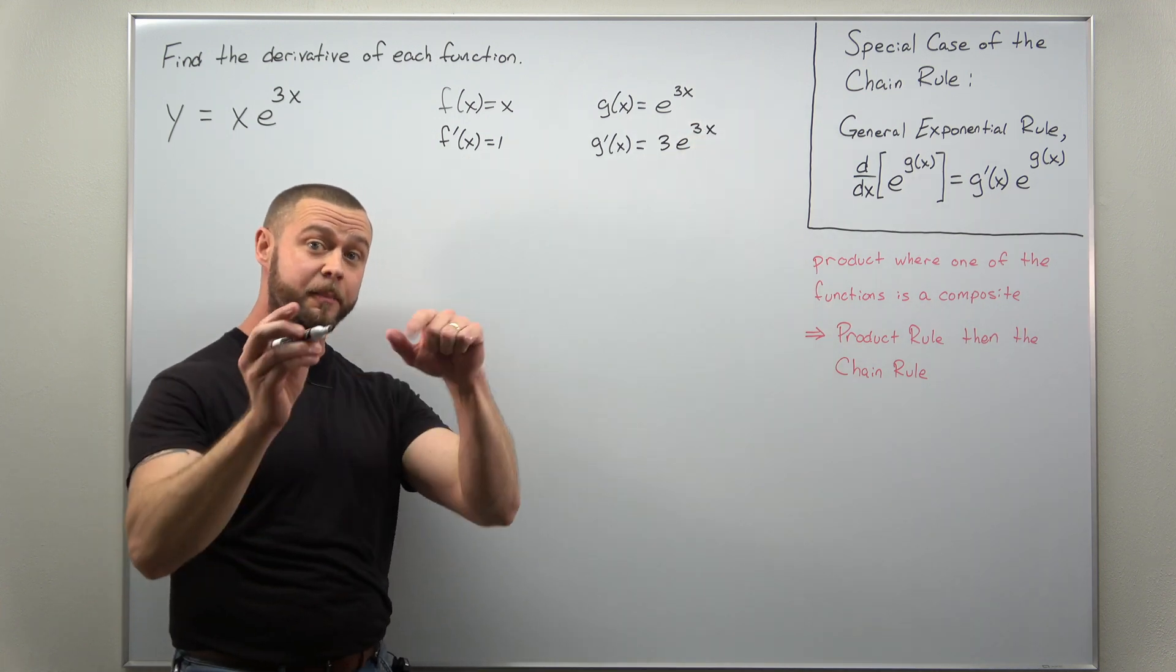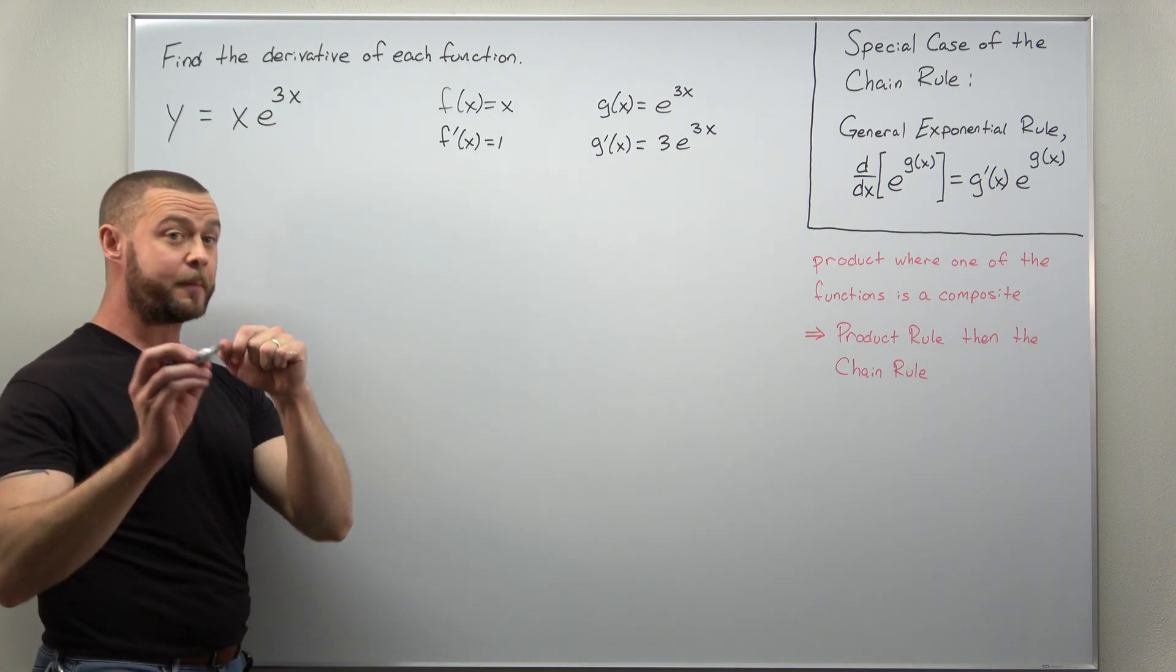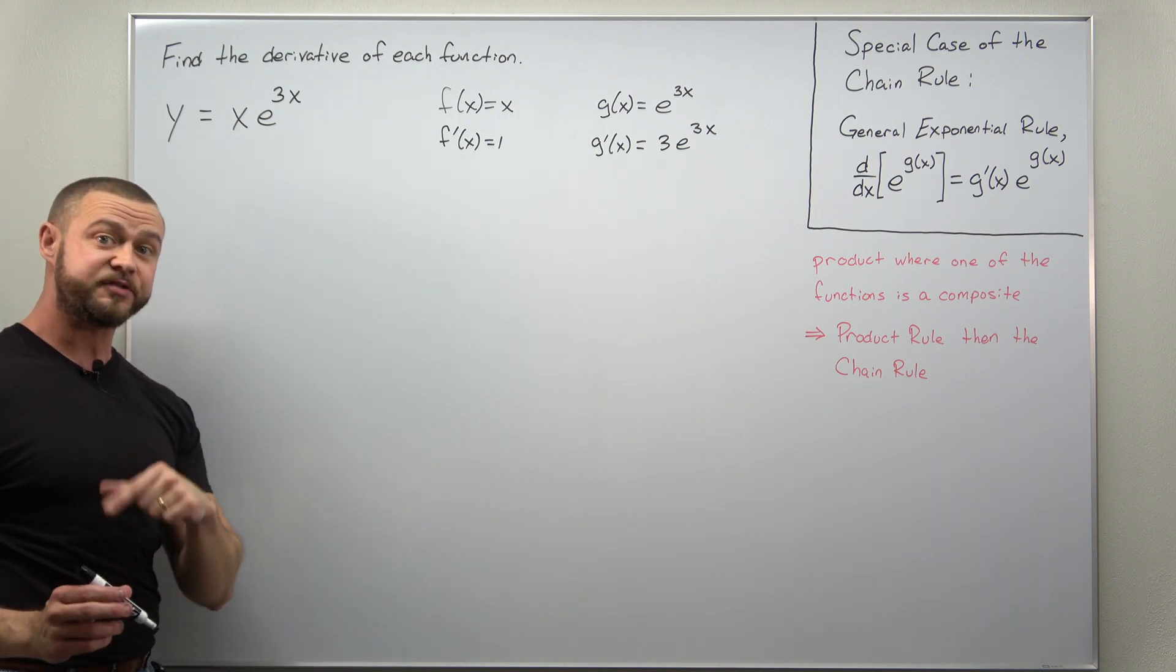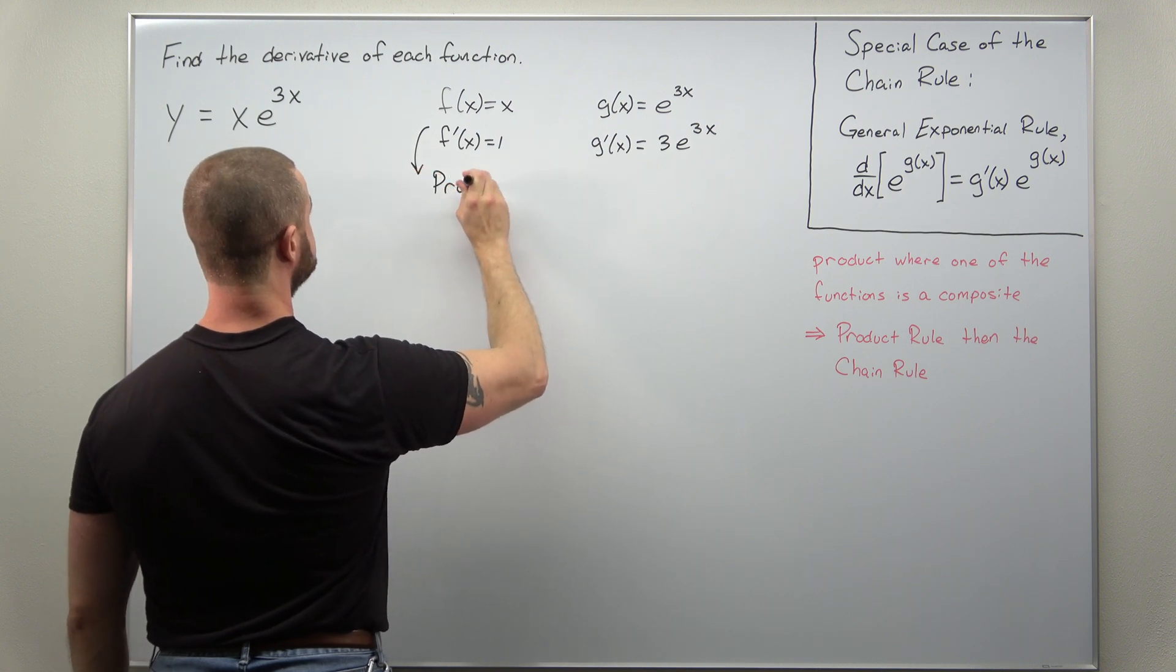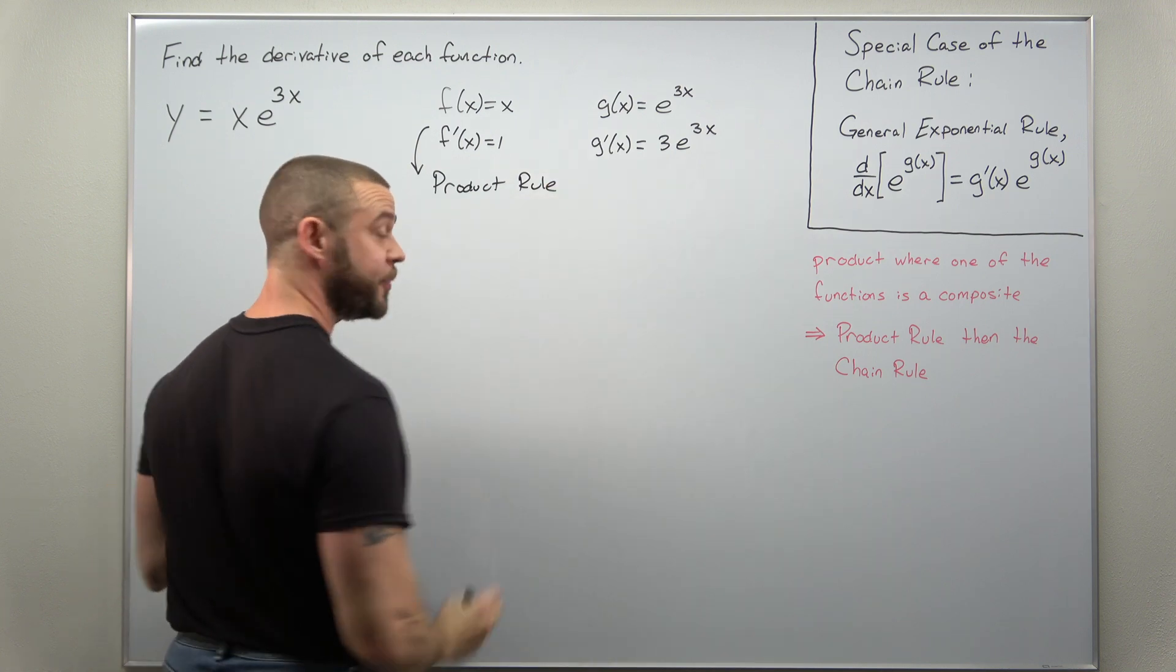Now we need to combine our pieces back together according to this product. Remember, we're thinking of our function here as f(x) times g(x). So we're going to combine these pieces with the product rule.